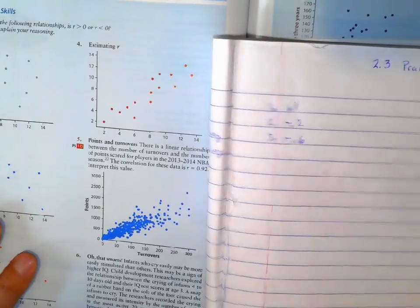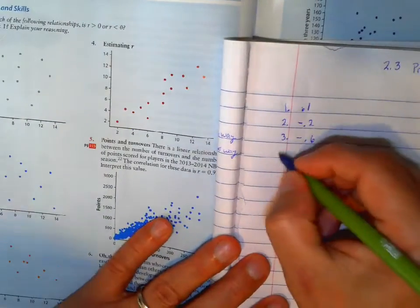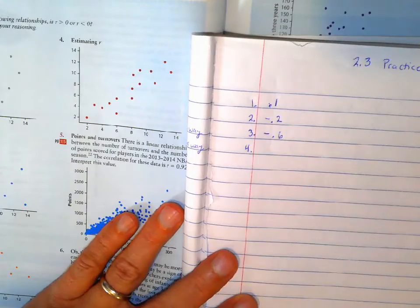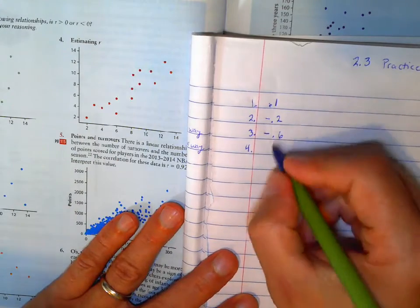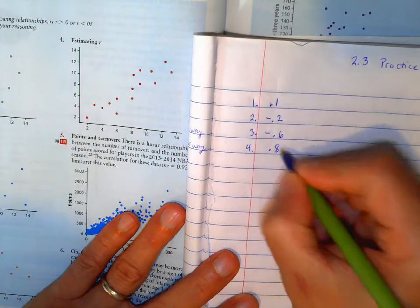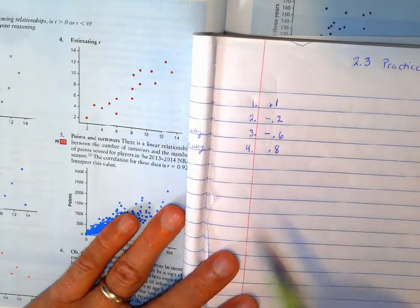Number 4, once again we're estimating that. That has a positive slope. So we're going to have a positive correlation, and it's even better than this other one. So I'm going to say maybe 0.8 or 0.9. So we have looking at correlation there.